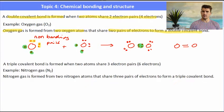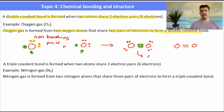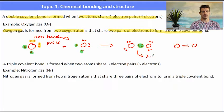A double covalent bond will be shorter and stronger than a single covalent bond.